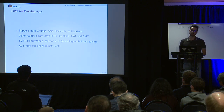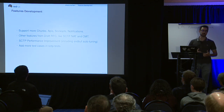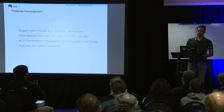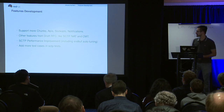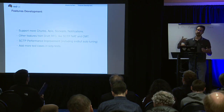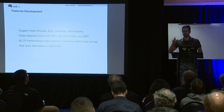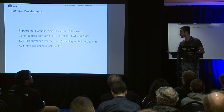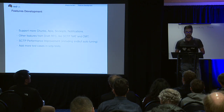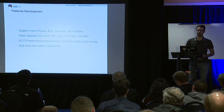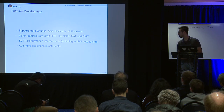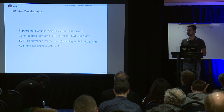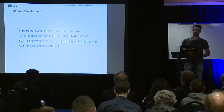What's next? We want to continue support for new chunks, APIs, struct options, and notifications as they are defined in new drafts and RFCs. We are experimenting with NAT for SCTP and CMT. NAT for SCTP is very complicated because you have IP addresses inside the header and a verification tag which also needs translating, and you need cooperation from firewalls in the middle of the network. We are doing performance improvements including send buffer auto-tuning — this is in the oven and should be going out in two or three weeks. We want to add more test cases to SCTP tests — we have 27 tests currently and we need more.